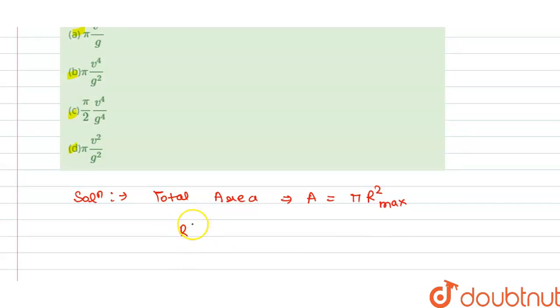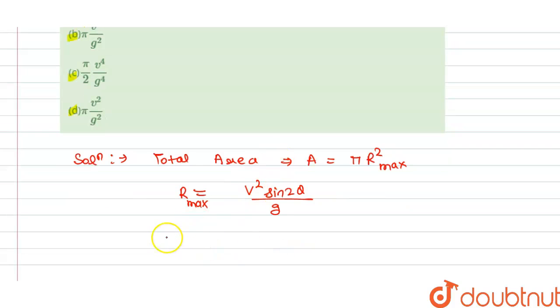So we can find the R max. This is equals to v² sin 2θ divided by g. Here v is the velocity.